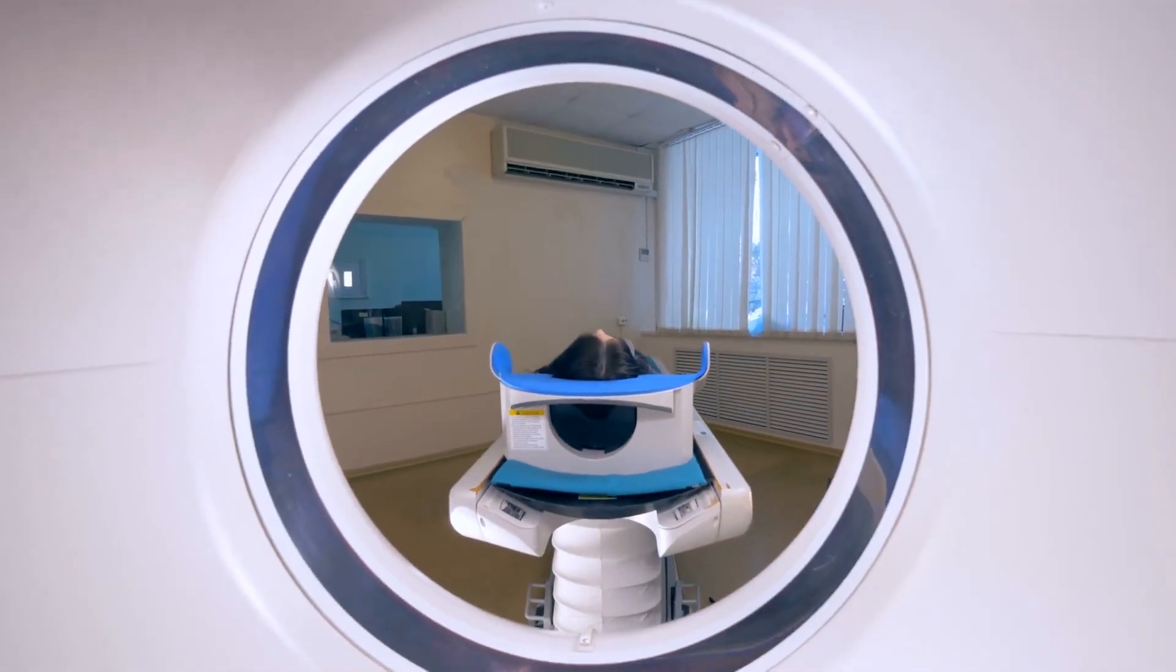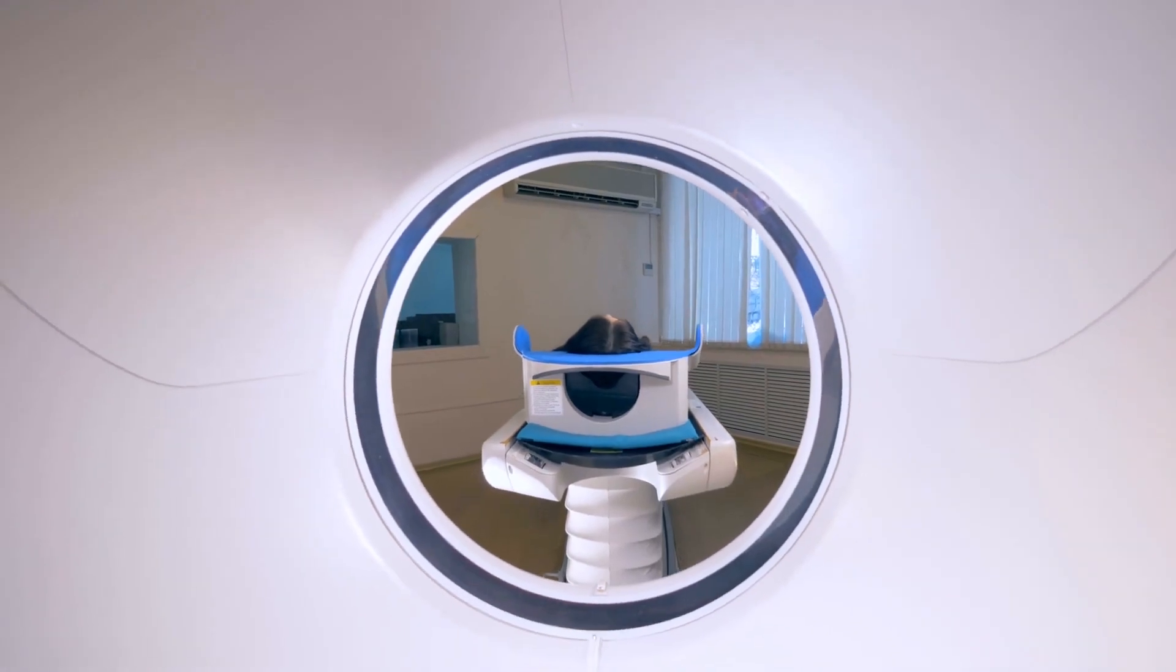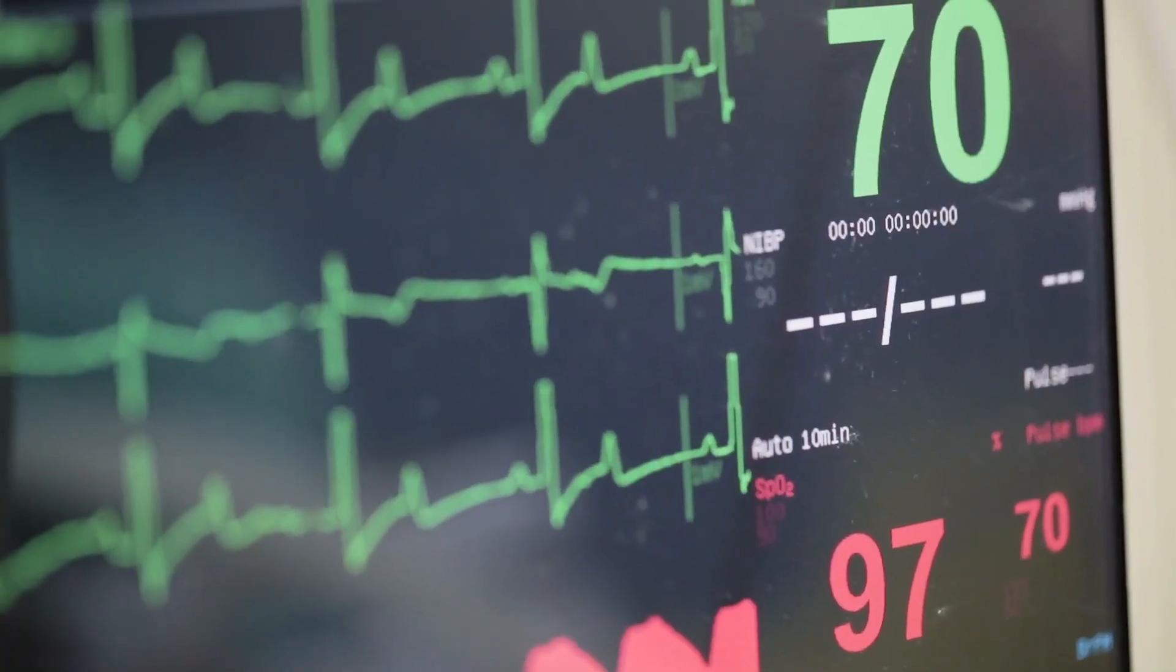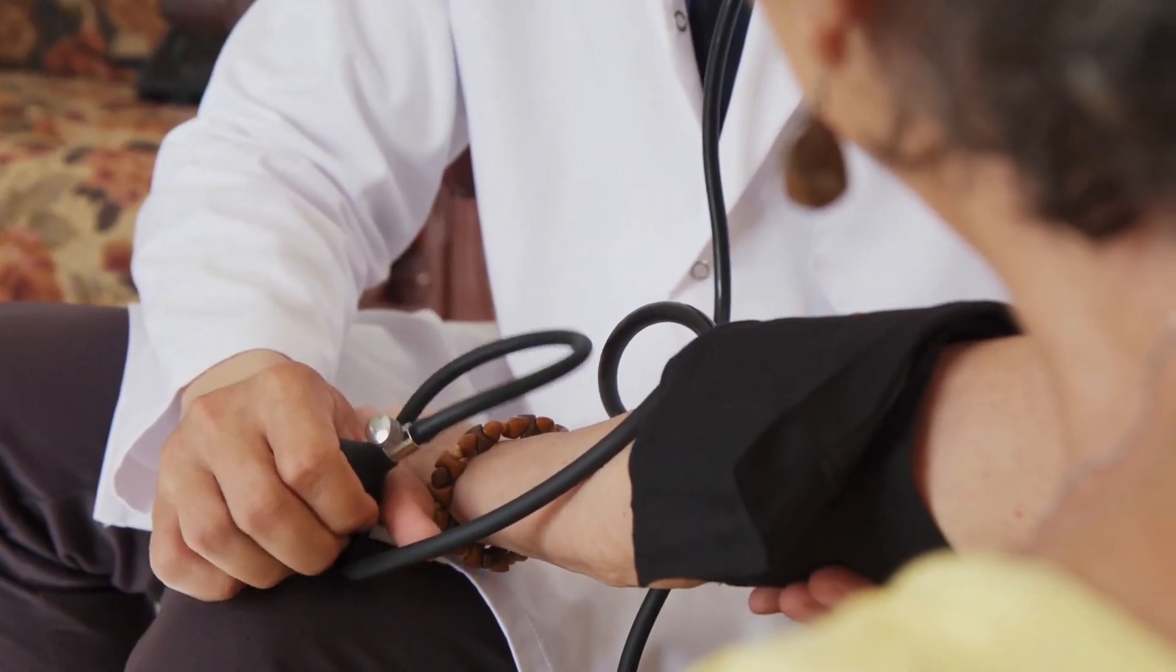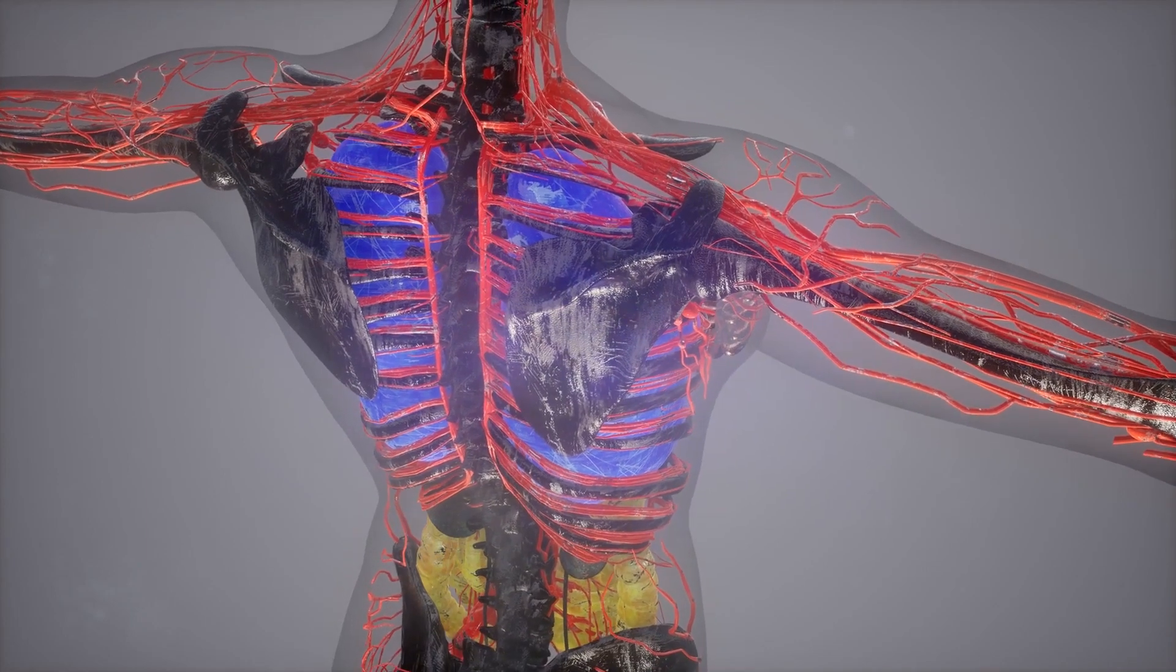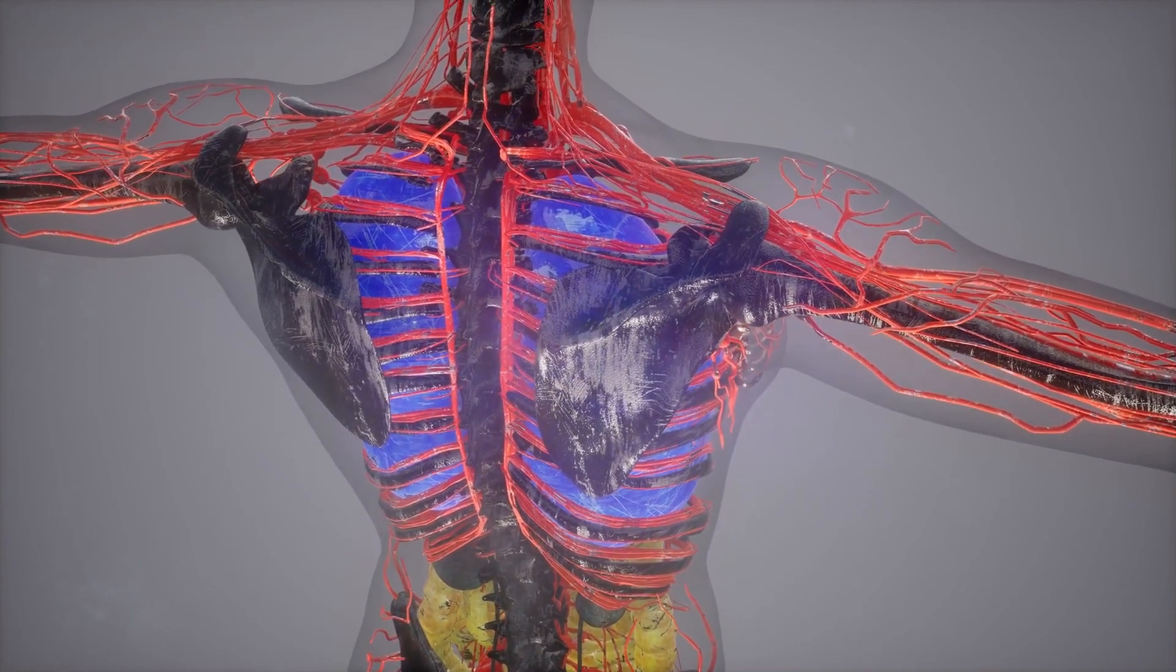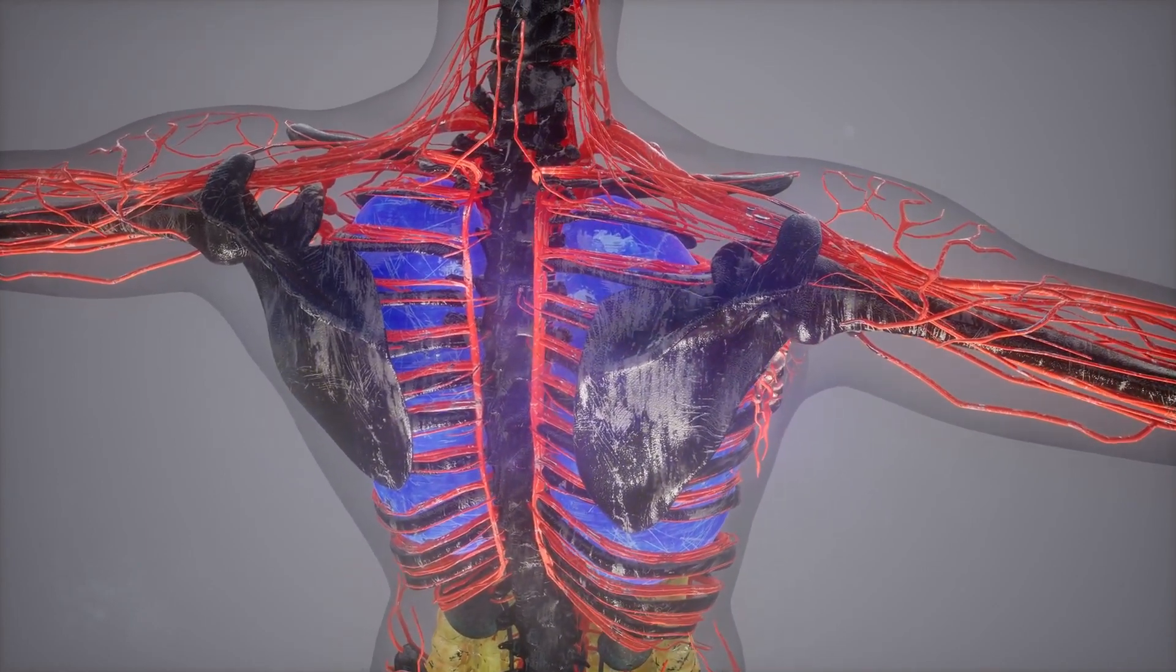The cancer treatment is called propranolol, a beta-blocker. It is used to treat many health conditions, such as irregular heart rate, anxiety, migraine, and high blood pressure. The drug essentially decreases the stress in different parts of the body, including the heart and blood vessels in the brain. By lowering stress, the risk of severe inflammation drops.